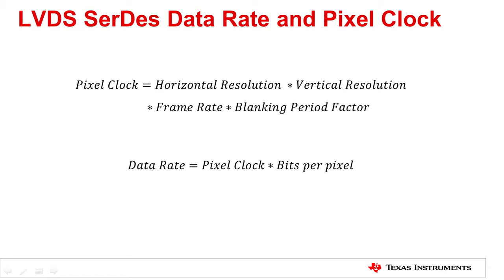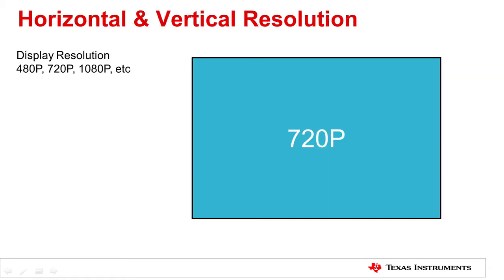Now let's break down each term to see what they are and how to get them. Horizontal resolution and vertical resolution are probably the easiest terms to understand. Common terms such as 480p, 720p, and 1080p are used to refer to display resolutions.